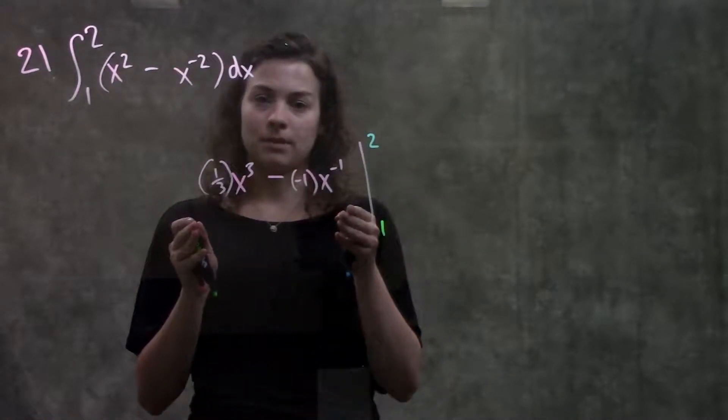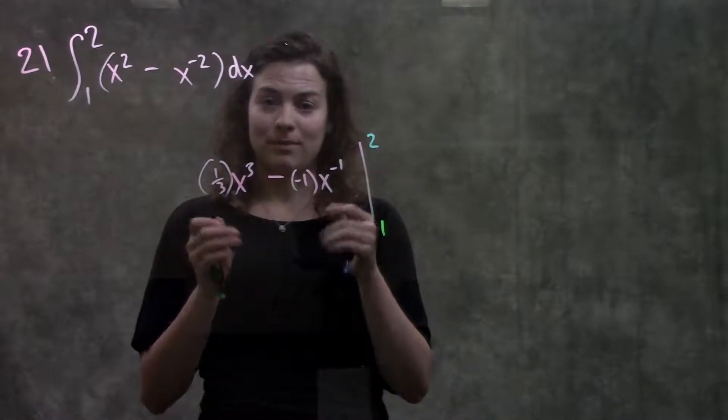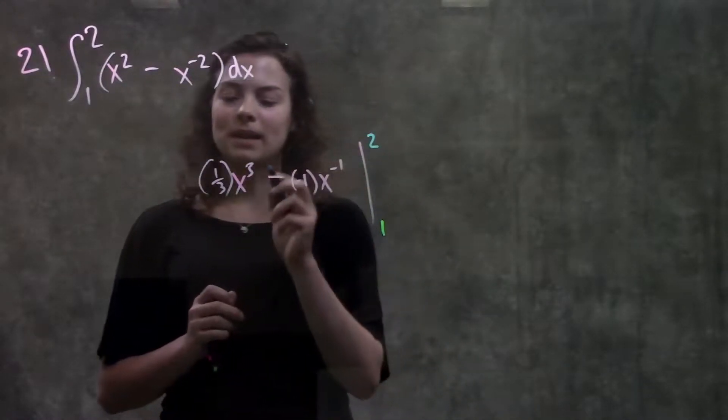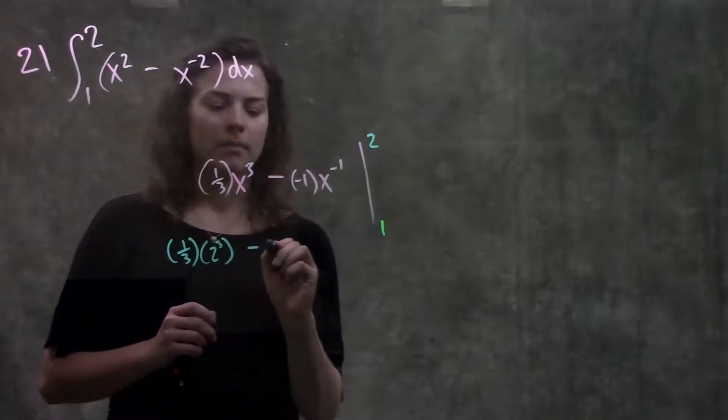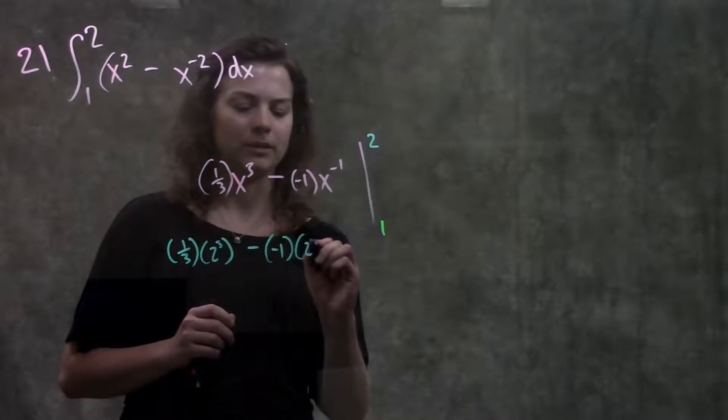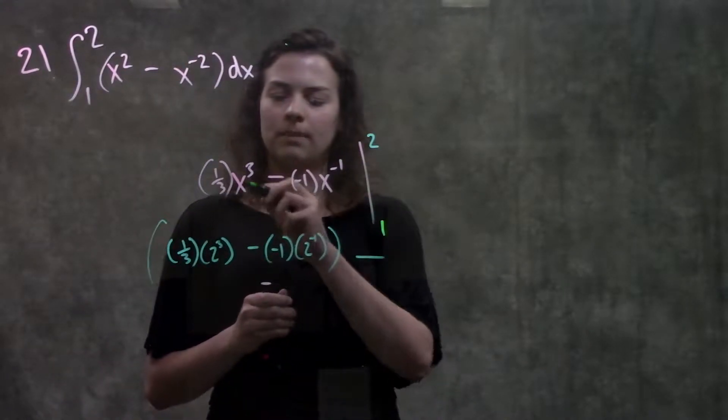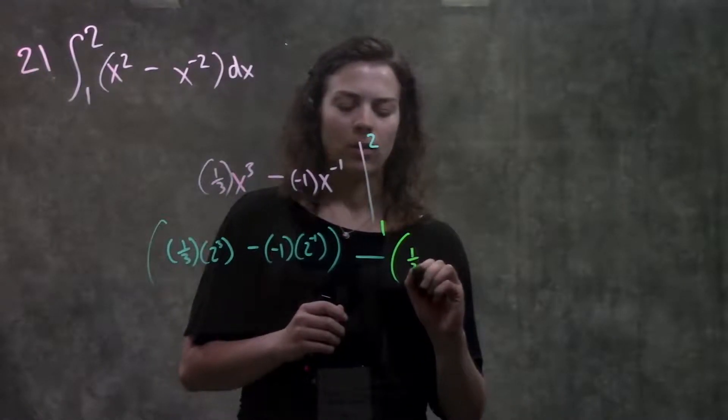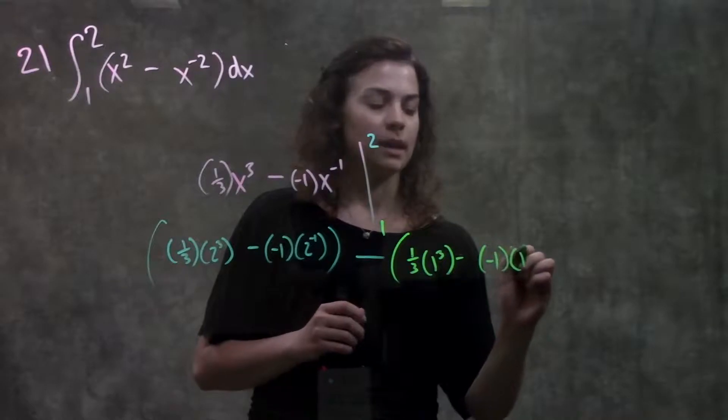And from here I'm going to plug in my top number into this entire thing, and then subtract whatever I get when I plug in my bottom number. So plugging in my top number, I get 1 third times 2 cubed minus negative 1 times 2 to the minus 1, all of that minus, when I plug in 1, I get 1 third times 1 cubed minus negative 1 times 1 to the minus 1.